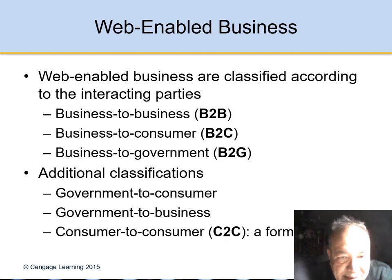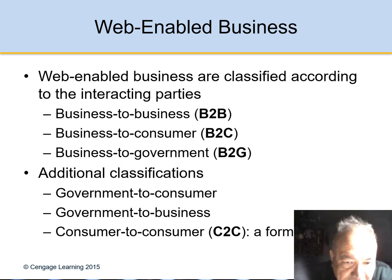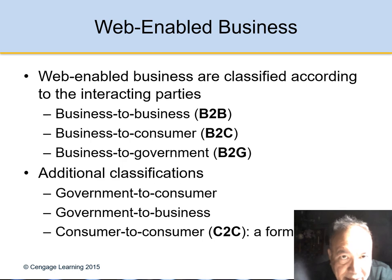Web-enabled business involves several types of relationships: business-to-business, business-to-consumer, and business-to-government. Sometimes it's the other way around — government-to-consumer, government-to-business, and consumer-to-consumer. For example, eBay is a consumer-to-consumer kind of relationship. These are the relationships available on the internet.